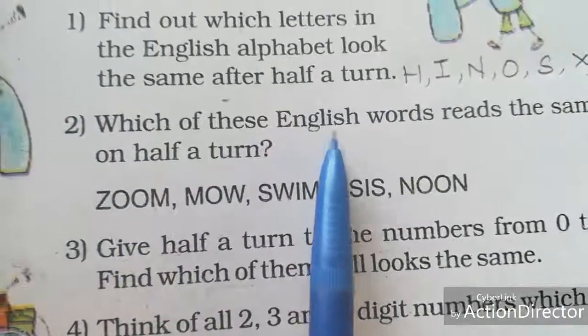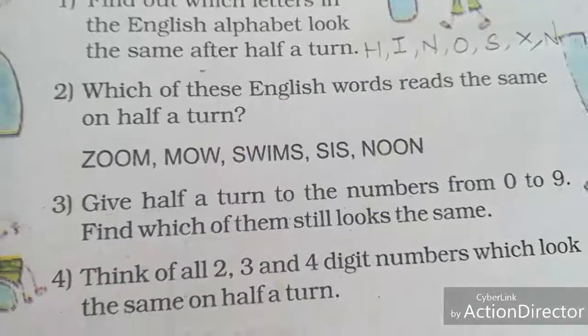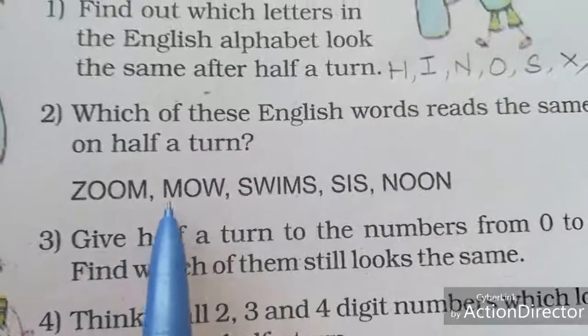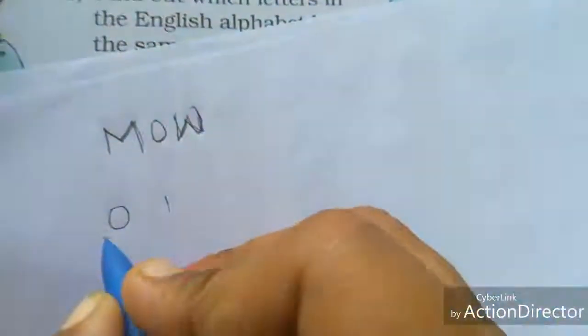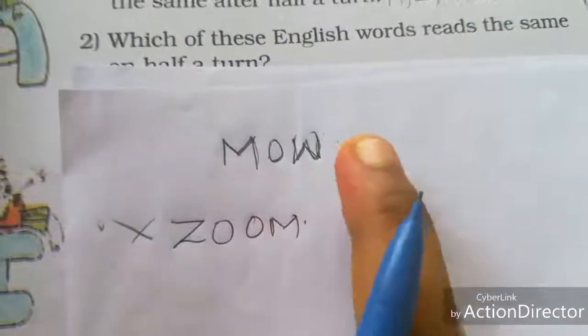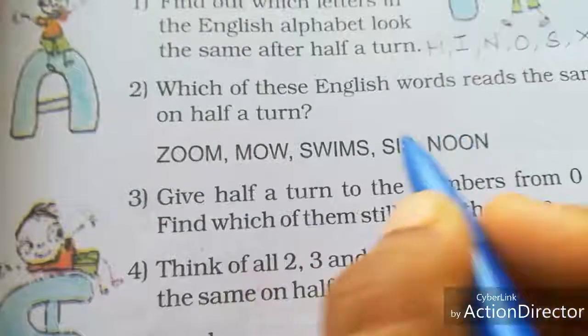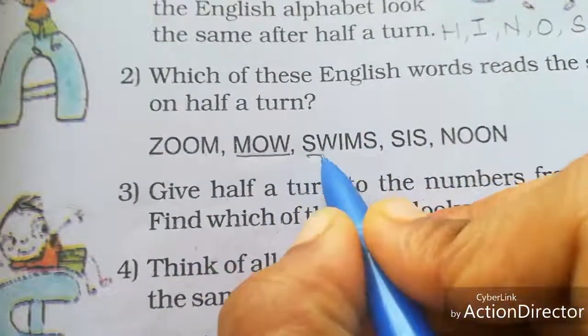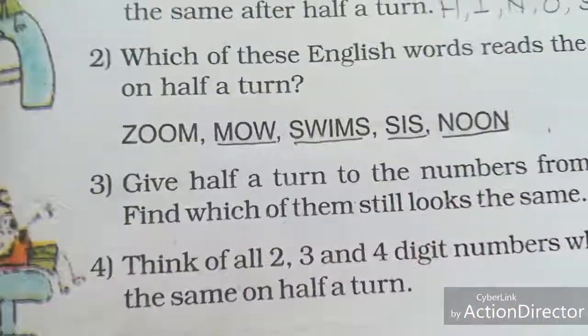Which of these English words reads the same on a half turn? First word — ZOOM. Z, O, M — this is the position. The 1/4 turn means it looks like this, and half a turn means it looks like this — it becomes OOZE, not ZOOM. Next — MOW. For 1/4 turn it looks like this, for half a turn the position is M, O, W — MOW. These are the words that read the same on a half turn: MOM, SWIMS, SIS, NON. You check in your home.